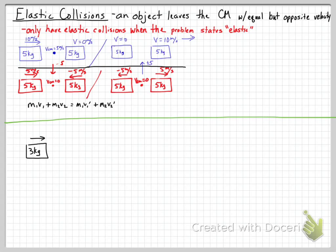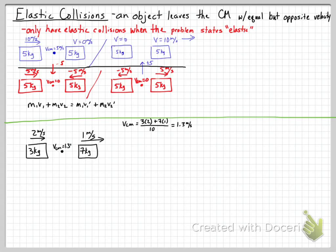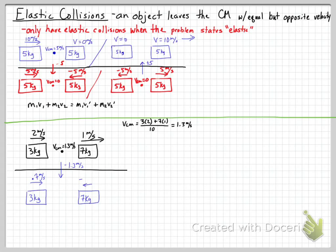Now we'll do another example where the numbers aren't so clean. We have a 3 kg object moving at 2 meters per second and a 7 kg object moving at 1 meter per second. These objects are going in the same direction. The velocity of center of mass is (3×2 + 7×1) / 10 = 1.3 meters per second. Now we subtract 1.3 m/s: the 3 kg object travels at 0.7 m/s and the 7 kg object travels at negative 0.3 m/s, so they're moving in opposite directions and vcm is zero.